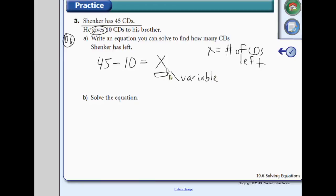This is the letter that represents some kind of thing. In this case, the number of CDs left, and it can change, right? How could this number change? Well, it would depend on how many CDs he gave away. If he only gave away 5, it would change. So 45 minus 10 equals x.